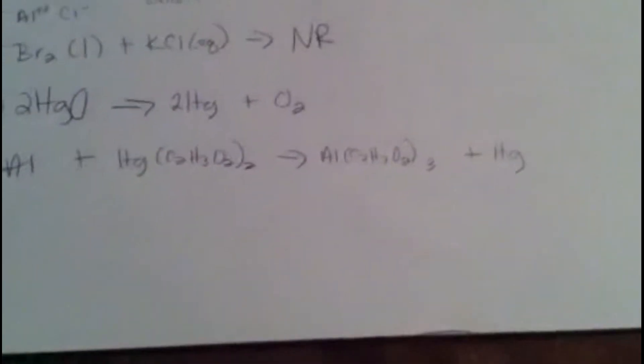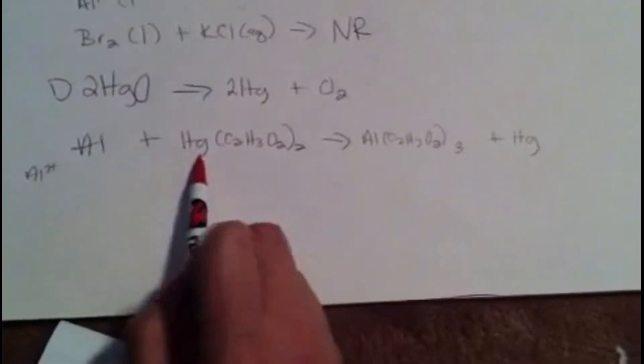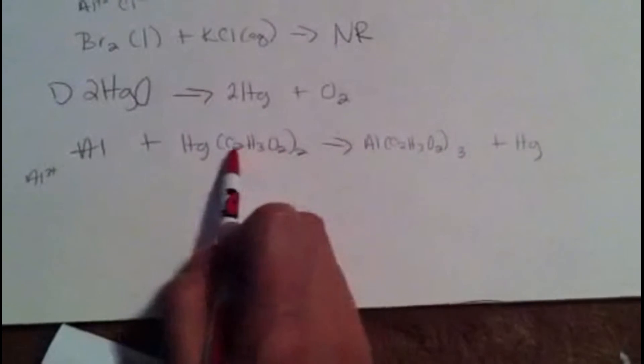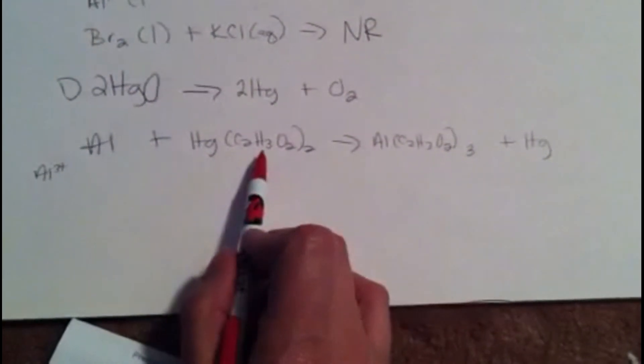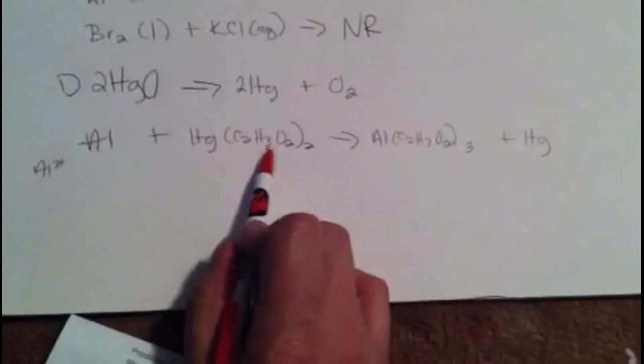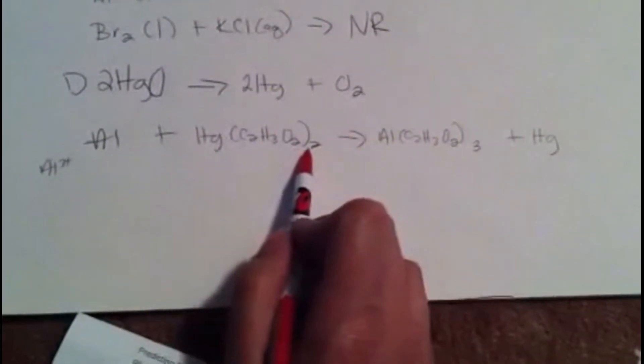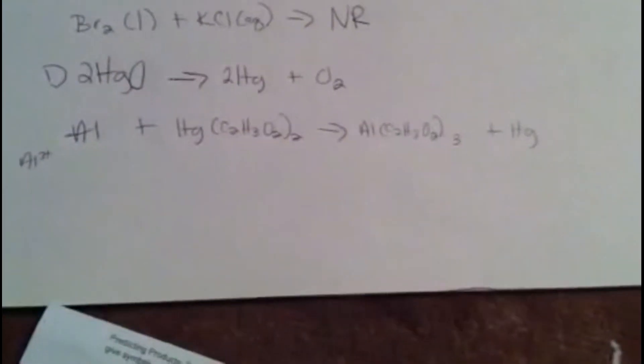Alright. So aluminum is a 3 positive and the acetate is a negative 1. So on this side, I'm going to get Al(C2H3O2)3 plus mercury. So for this problem, we are going to look at balancing it now that we have it written out. So we have 1 aluminum, 1 aluminum. We have 1 Hg, 1 Hg. Carbon. We've got 4 carbon, we have 6 carbon. We got an issue. But let's keep going for a second. Over here, we've got 6 hydrogen, 9 hydrogen, 4 oxygen, 6 oxygen. So obviously there's an issue.